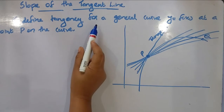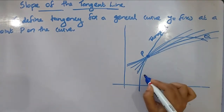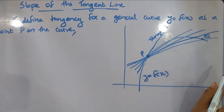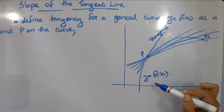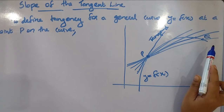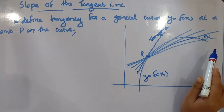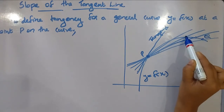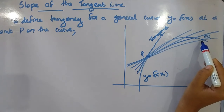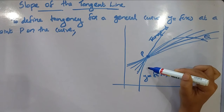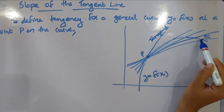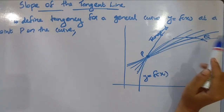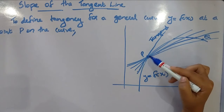To define tangency of a general curve y = f(x) at a point P on the curve, we need a dynamic approach that takes into account the behavior of the secant through P and nearby point Q. As Q moves towards P along the curve, the secant line becomes the tangent line at P.